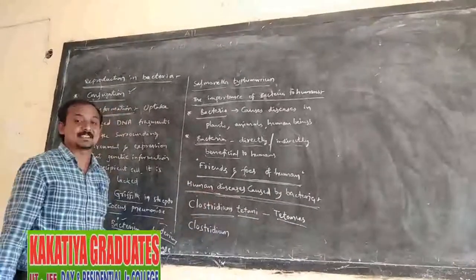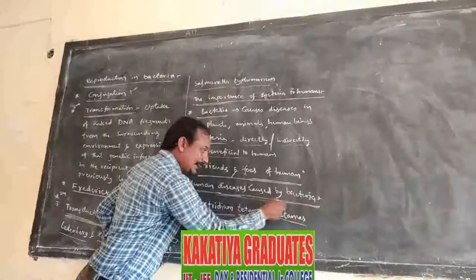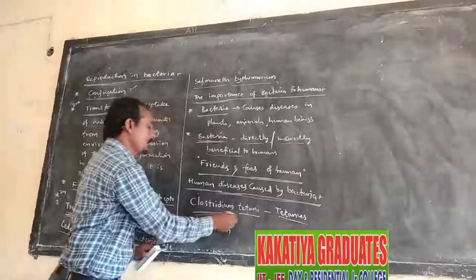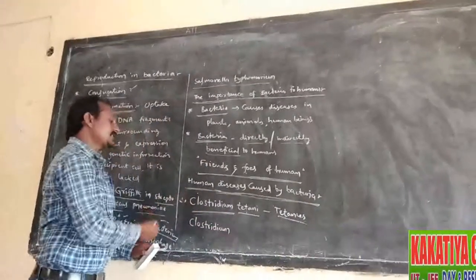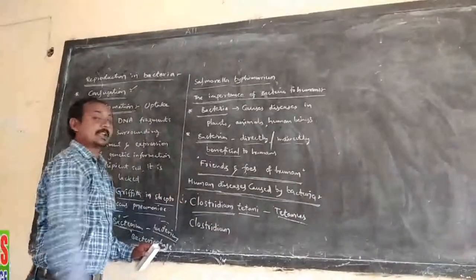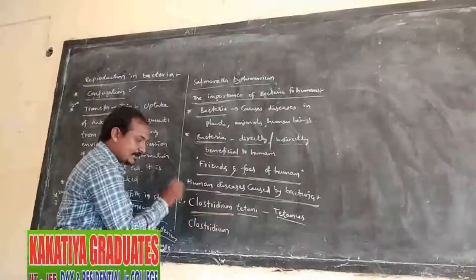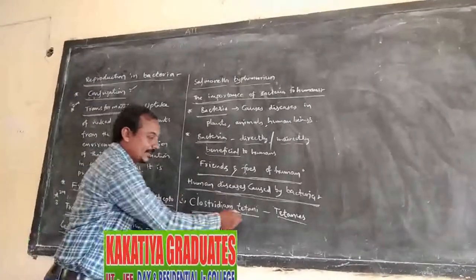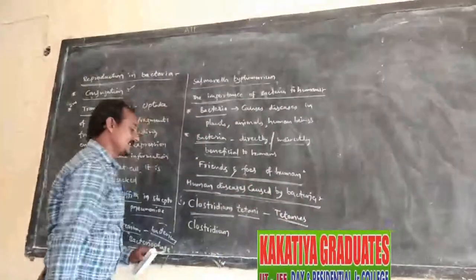Some human diseases caused by bacteria. First one: Clostridium tetani. Clostridium tetani is a bacteria. It causes tetanus disease.